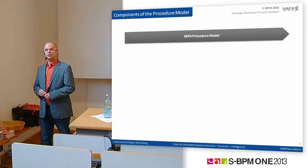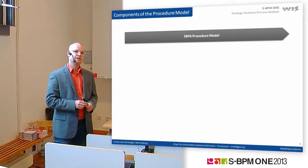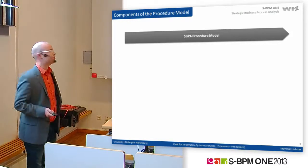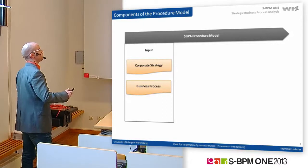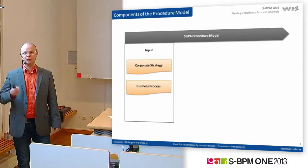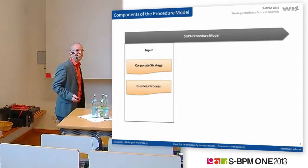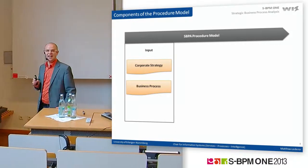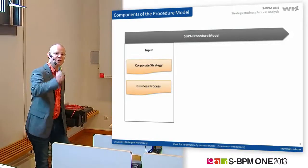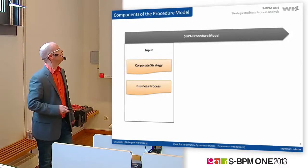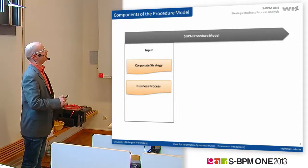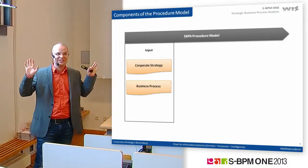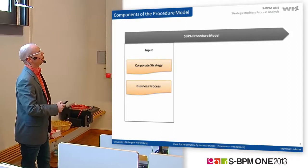We designed a model and also implemented this model in different companies. Most of them were industrial companies and the managers were quite satisfied. This procedure model has, first of all, an input. I need a corporate strategy as an input for the model and a business process I want to look at. But in fact, when you go into a company, they often say there's one problem: we haven't cascaded the overall strategy of our company into this and that process, so we have to do that now, because the strategy is missing at present.